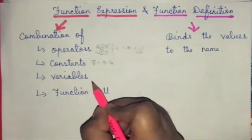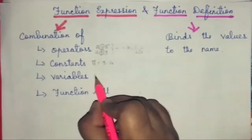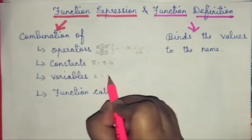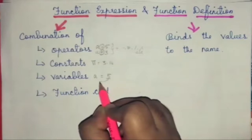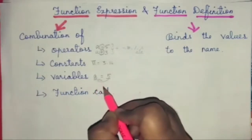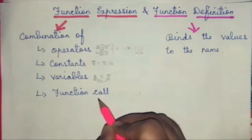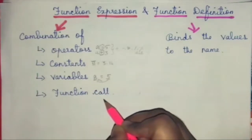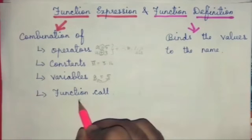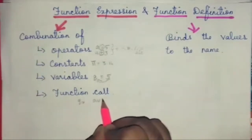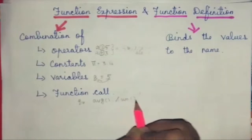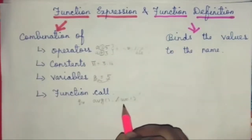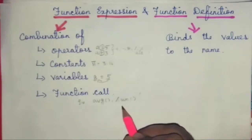Next one is variables. We will see one example: a = 5. So the value 5 is stored in the variable a. A is a memory area. Next one is function call — when we are calling a function. For example, average, sum — these are all functions. Functions are enclosed by a pair of parentheses. So this is called a function expression.